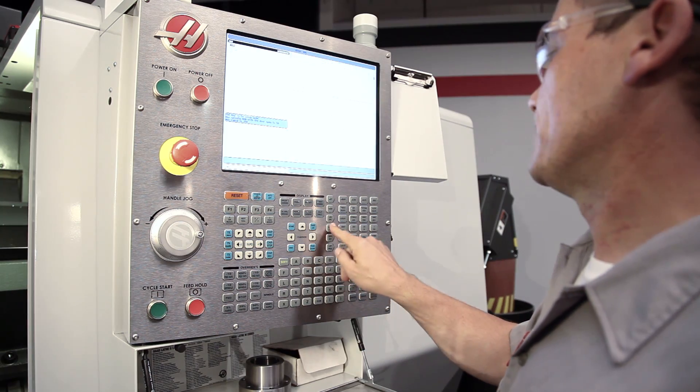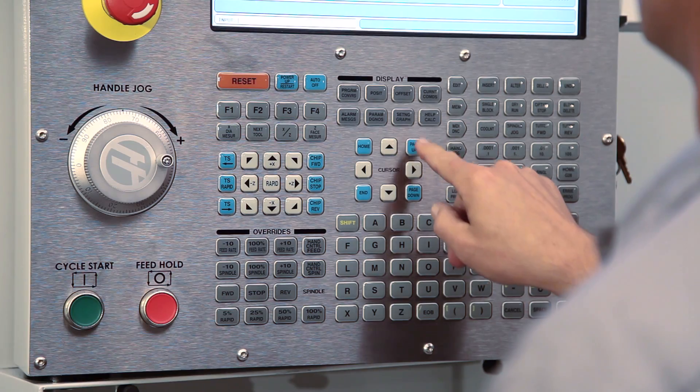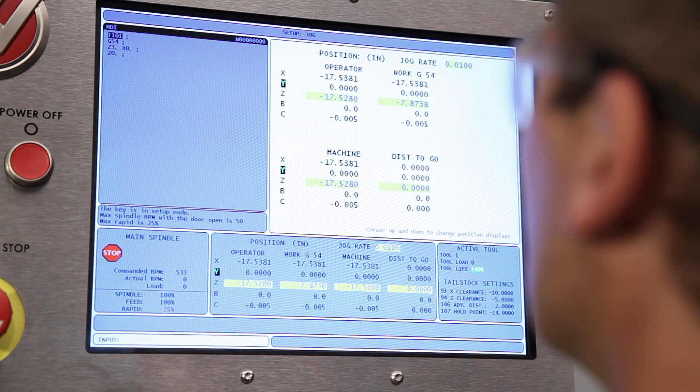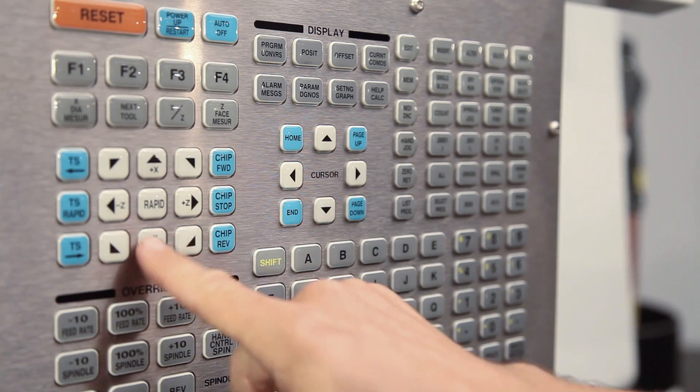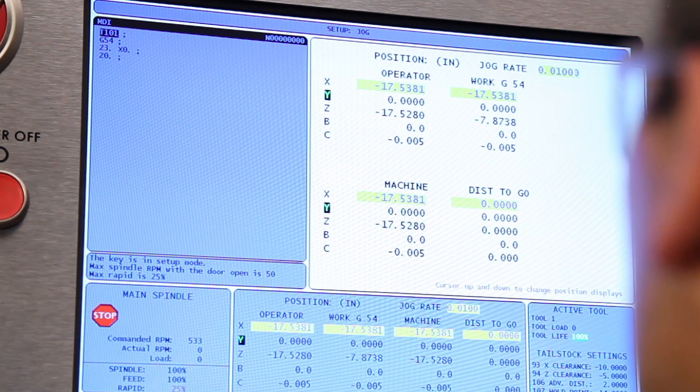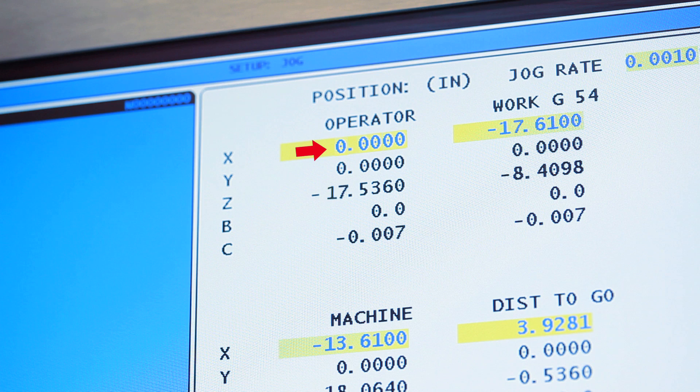Press Hand Jog, press Current Commands, and press Page Up until you reach the Position page. With X-Axis selected, press Origin to zero out the operator position field.